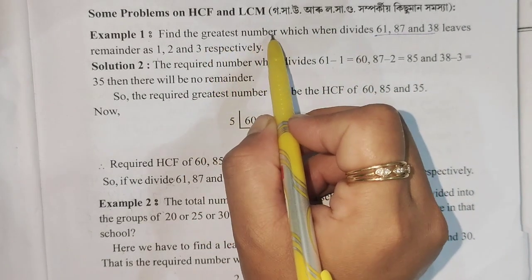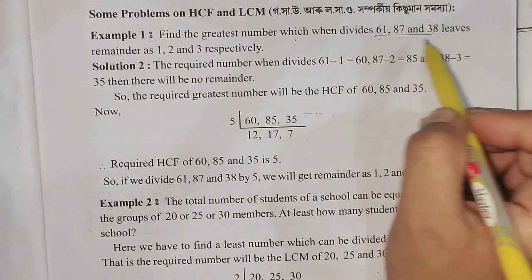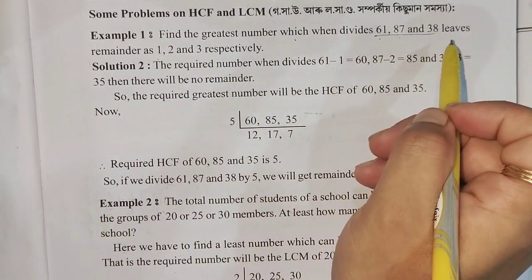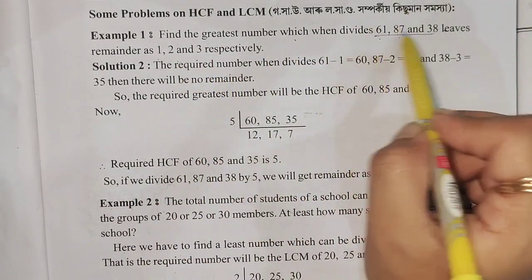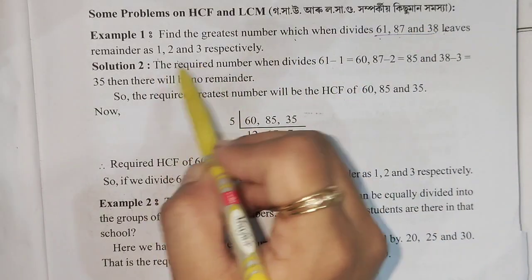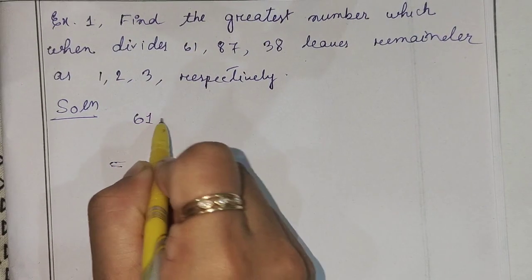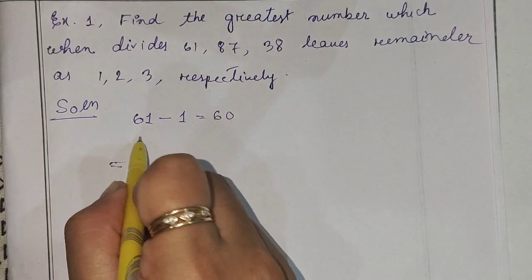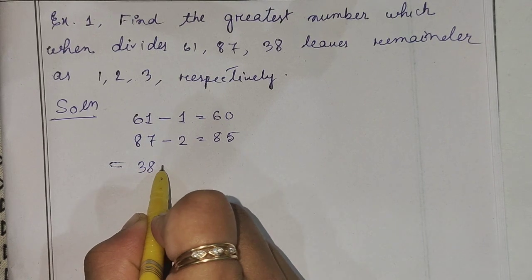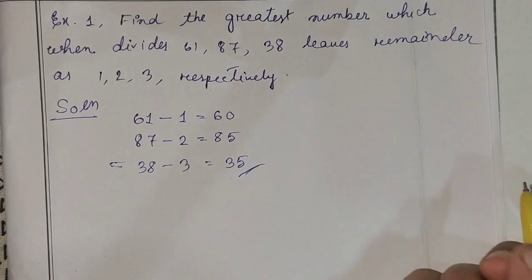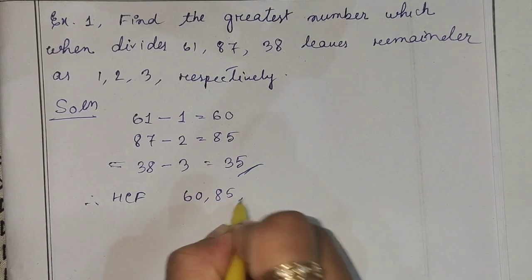The greatest number which when divides 61, 87, and 38 leaves remainders of 1, 2, 3 respectively. So we subtract the remainders: 61 minus 1 equals 60, 87 minus 2 equals 85, and 38 minus 3 equals 35. So we work with 60, 85, and 35.